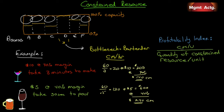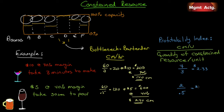For the fancy drinks, with a 70% margin we make $7 per unit, but it takes 3 minutes to make — giving $2.33 in contribution margin per minute. For the beer and wine, the contribution margin per unit is only $2 ($5 × 40%), but it only takes half a minute to make. So the bartender can generate $4 in contribution margin per minute on beer and wine, compared to $2.33 on the fancy drinks.